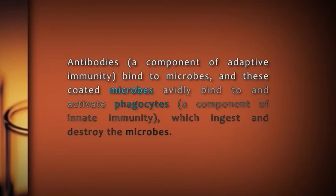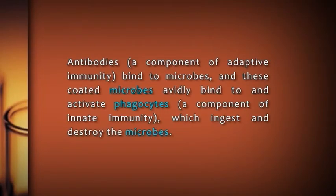For example, antibodies, a component of adaptive immunity, bind to microbes, and these coated microbes eventually bind to and activate phagocytes, a component of innate immunity, which ingest and destroy the microbes. In this manner, the innate and adaptive immunity operate in a cooperative and interdependent way. The activation of innate immune responses produces signals that stimulate and direct subsequent adaptive immune responses. Innate immunity is phylogenetically older than the more specialized and powerful adaptive immune response.